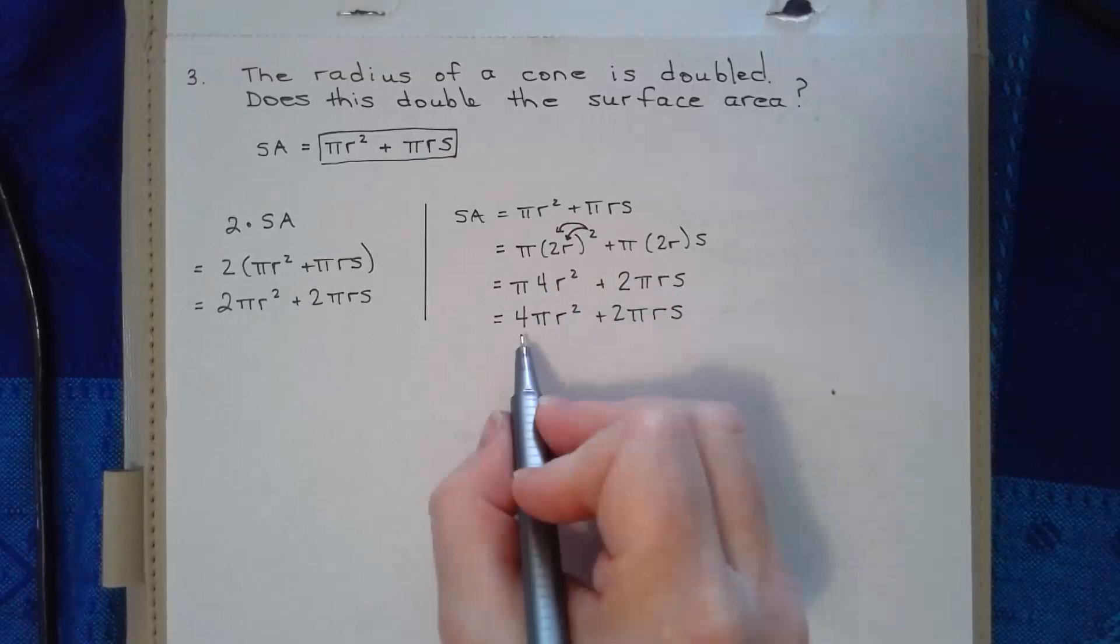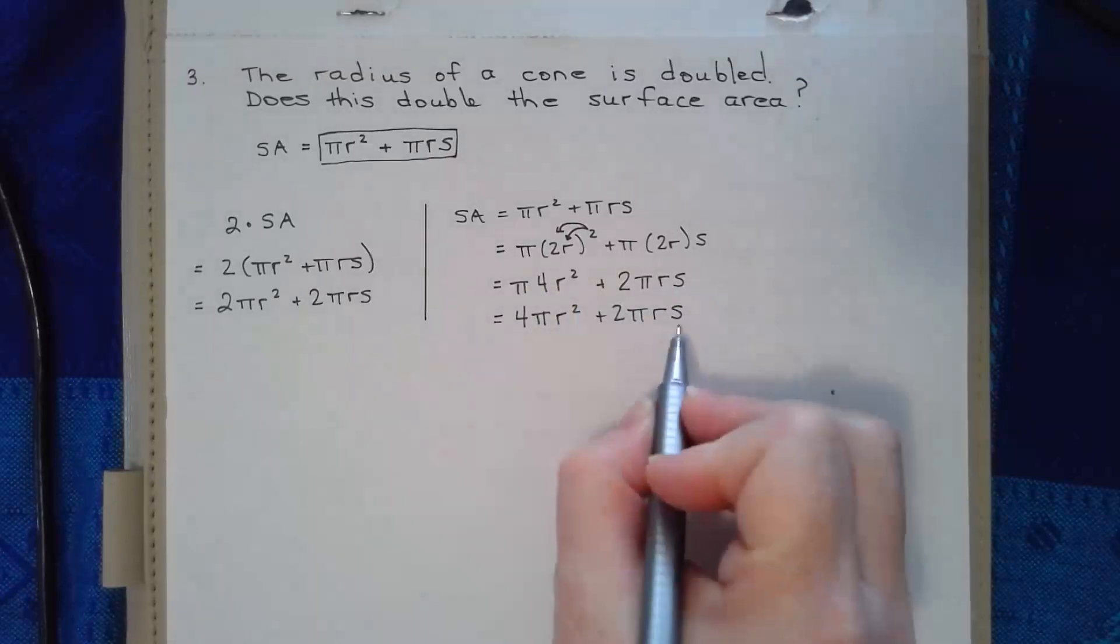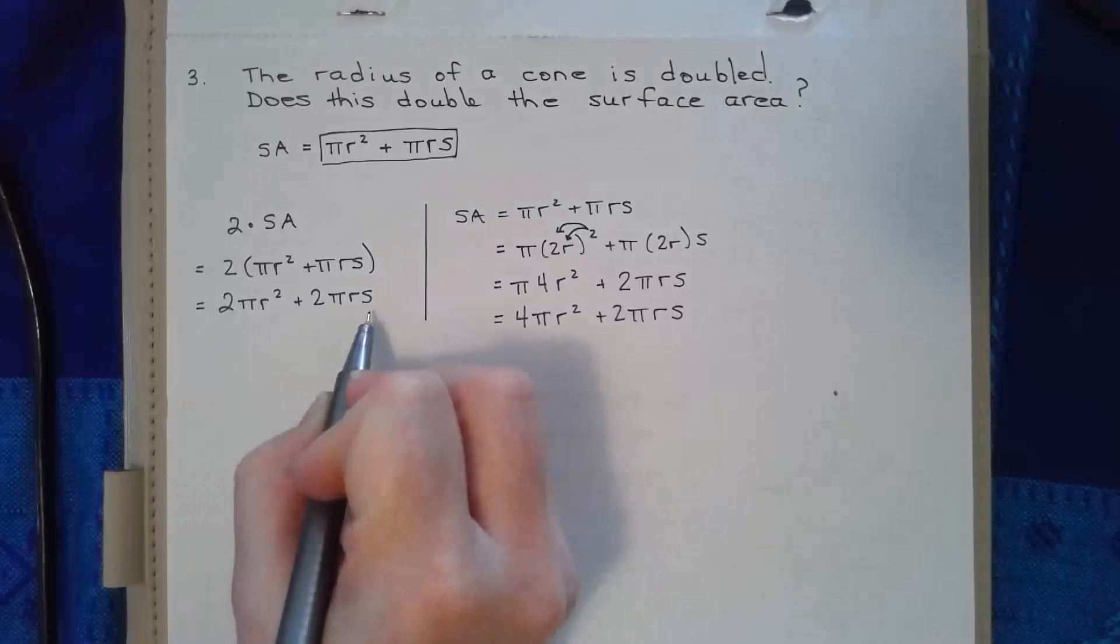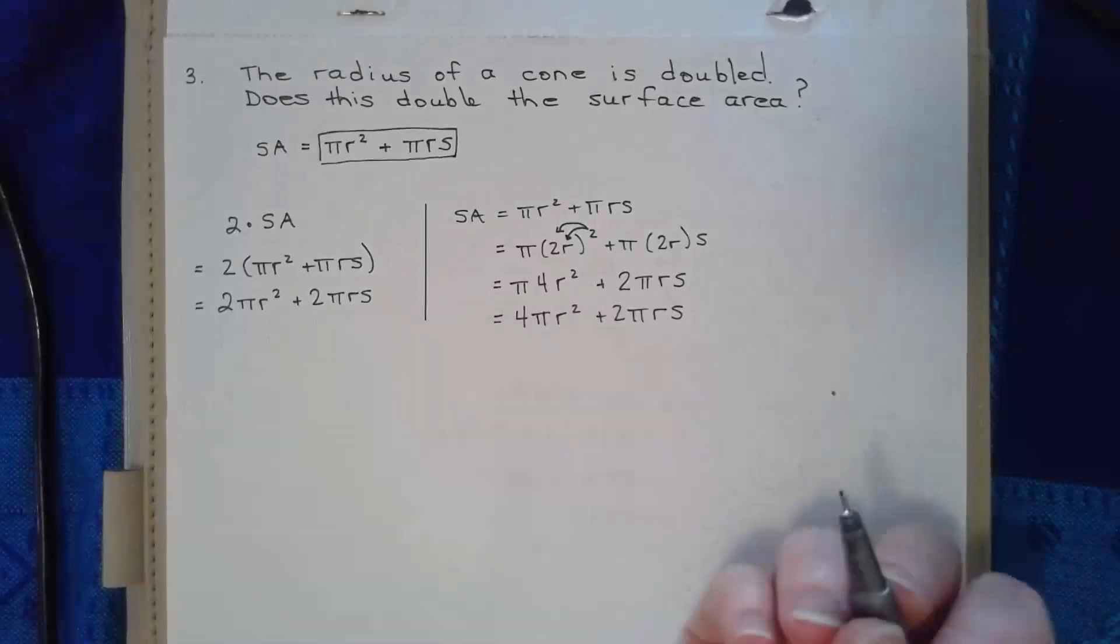So if I take a look here, I have four pi r squared plus two pi r s. And that doesn't equal two pi r squared plus two pi r s. So the answer to this question then would be no.